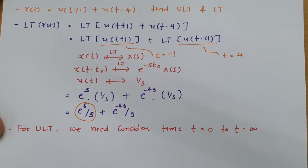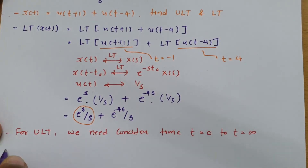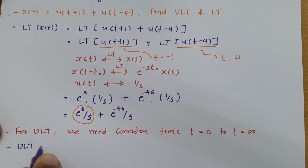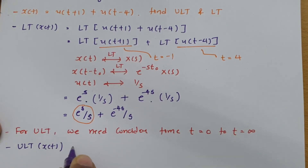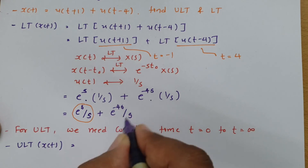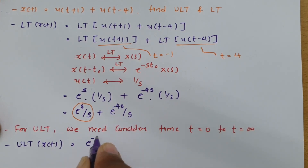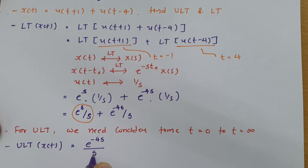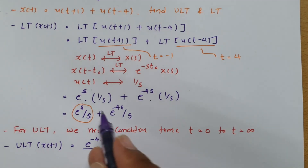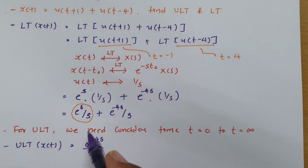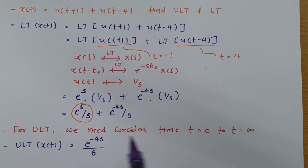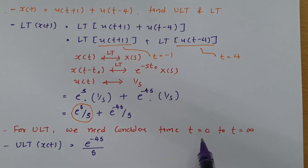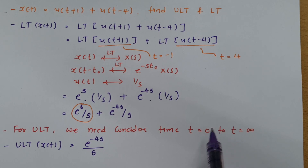Since u(t+1) is not present in the calculation of the unilateral Laplace transform, the ULT of x(t) is only e^(-4s)/s. Normally, we calculate the Laplace transform first, then check the time range from 0 to infinity. Any signal not within this range is replaced with 0 — that gives us the unilateral Laplace transform.